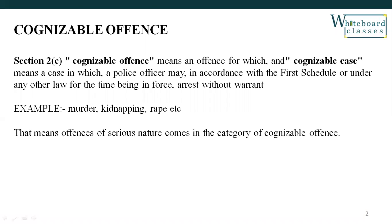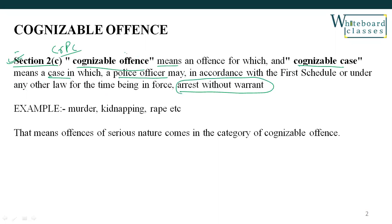First of all, Cognizable Offences. Section 2C of CRPC, the Code of Criminal Procedure, defines Cognizable Offences. Cognizable Offence means an offence, and Cognizable Case means a case in which a police officer may, in accordance with the first schedule or under any other law for the time being enforced, arrest without warrant. So, Cognizable Offences are those offences where police have power to arrest without warrant.